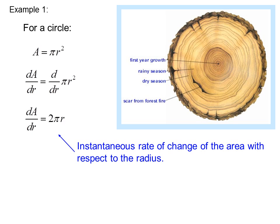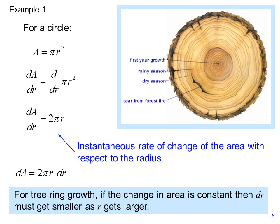dA dr gives us the instantaneous rate of change of the area with respect to the radius. We can multiply both sides by dr. This is one of those times when it's convenient to think of dA dr as a division. So we get dA equals 2 pi r dr. For tree ring growth, if the change in area is constant, then dr must get smaller as r gets larger. And in this equation, we can think of dA as a small change in A and dr as a small change in r.